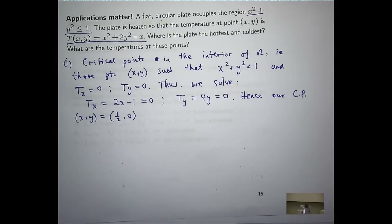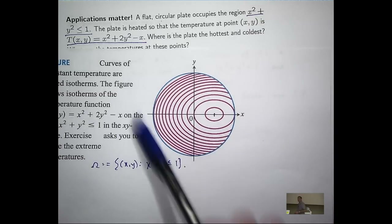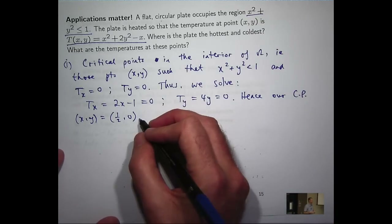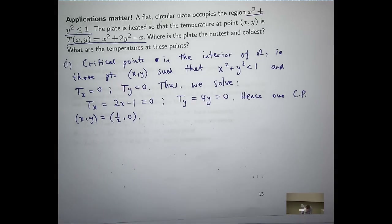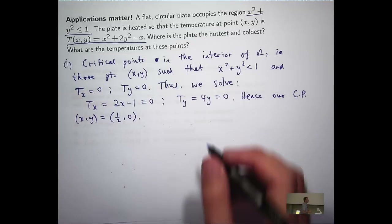The second observation is: is this critical point inside the region of interest? Yes, it is. So now what we can do is classify that critical point — does it lead to a local min, a local max, or something in between, the so-called saddle point, which is like a point of inflection. So let's classify it.